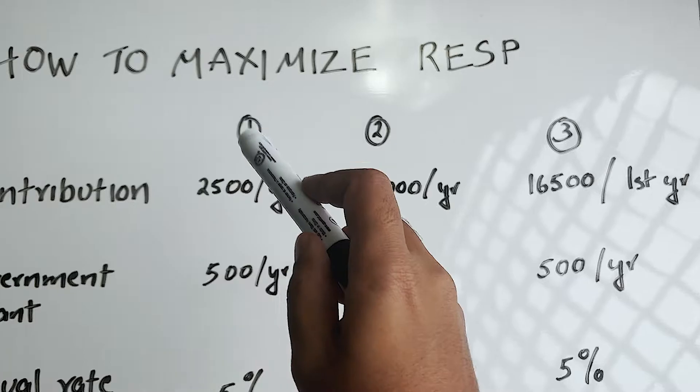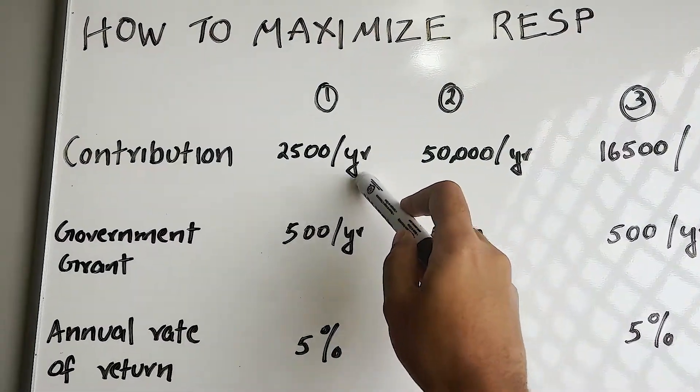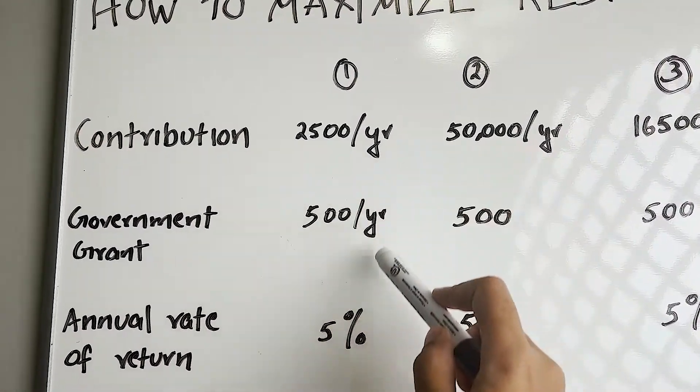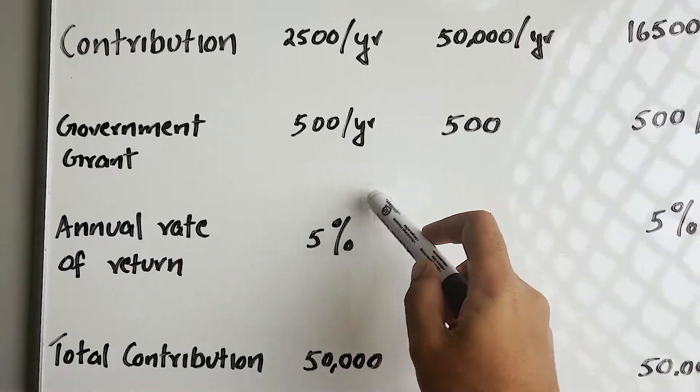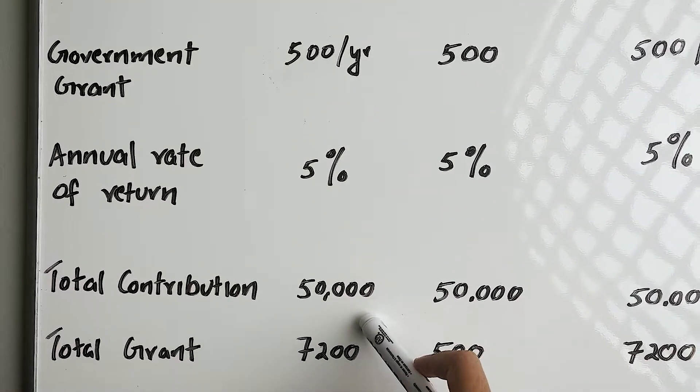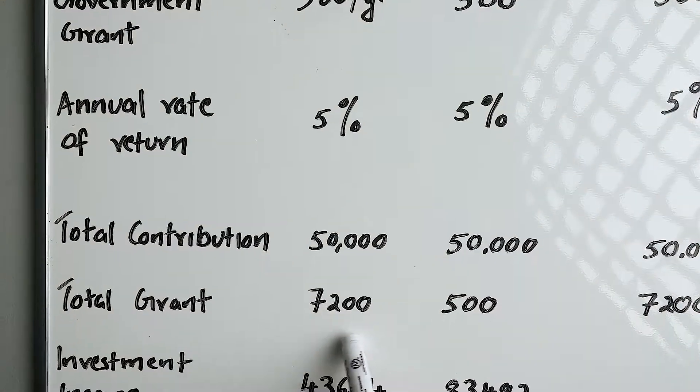Let's look at three scenarios here. In scenario one, we are contributing $2,500 per year and we can get $500 from the government grant every year. If we max our $50,000 contribution room, we can get $7,200 from government grants.